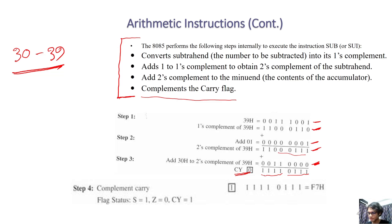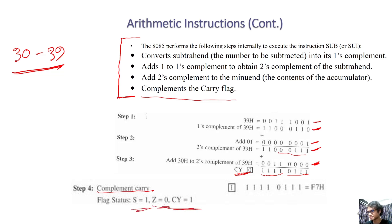What do you need to find — the carry flag? Okay. This is a complement for you. Complement is 0 and 1 is 0. Carry flag is 0. Sign flag is 0 and 0 is 0. This is a complement for you.